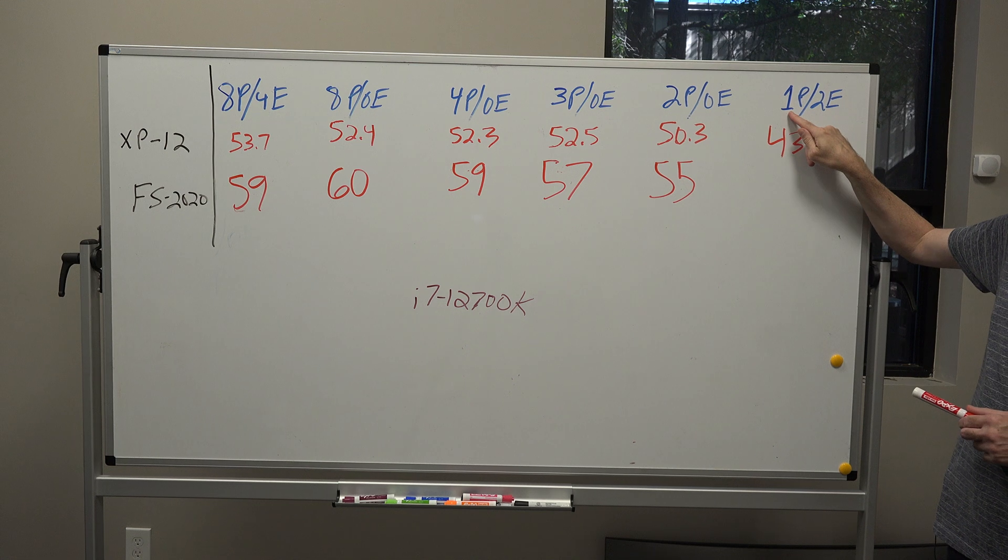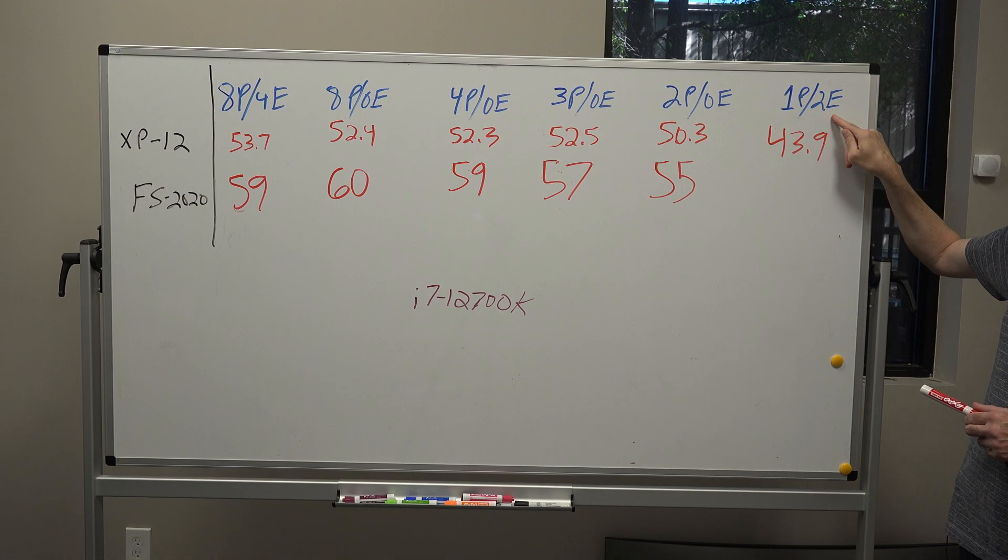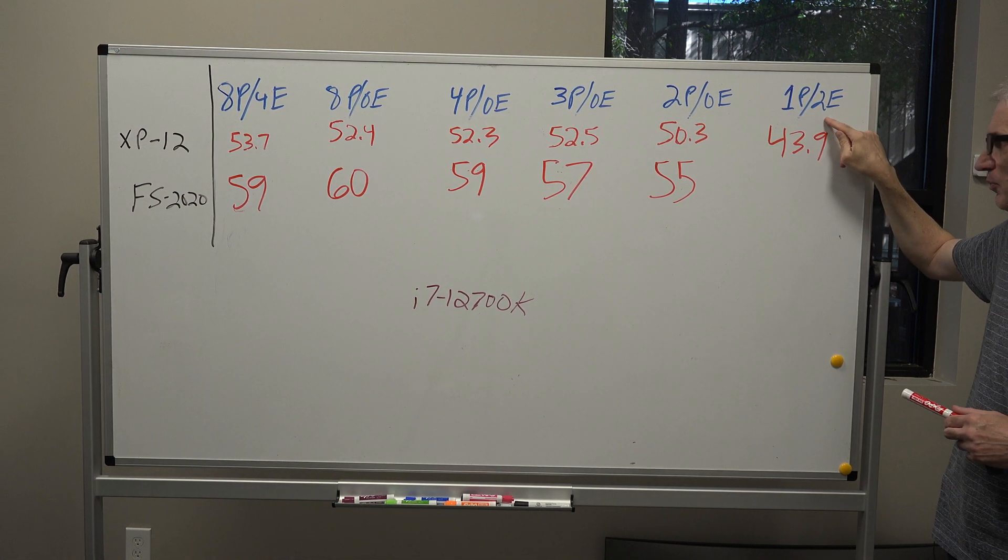Lastly, I took us down to one performance core and I enabled two efficiency cores so we could handle Windows background tasks, and we saw 51 frames per second.